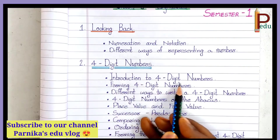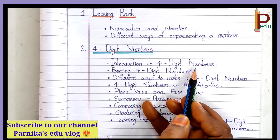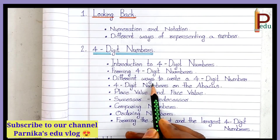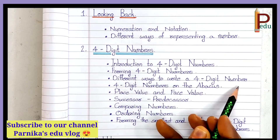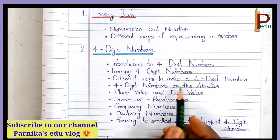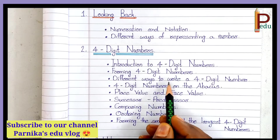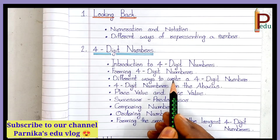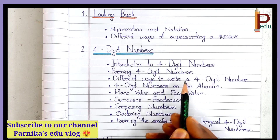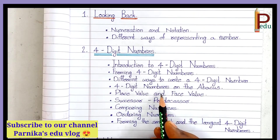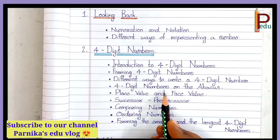First one is Introduction to Four Digit Numbers. Next, Forming Four Digit Numbers. Next, Different Ways to Write a Four Digit Number — that is, Standard Form, Word Form and Expanded Form. Then, Four Digit Numbers and Abacus — how to represent Four Digit Numbers on an Abacus.